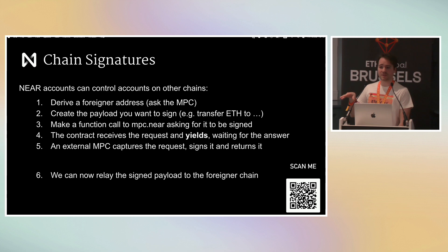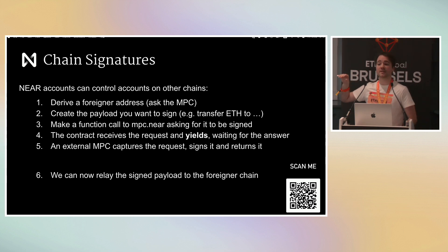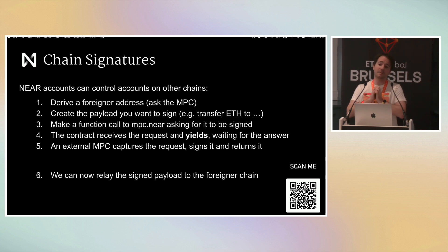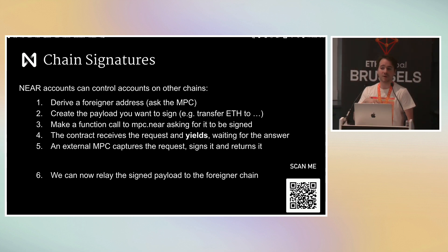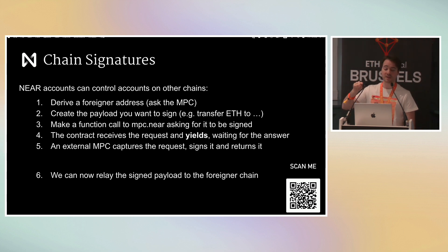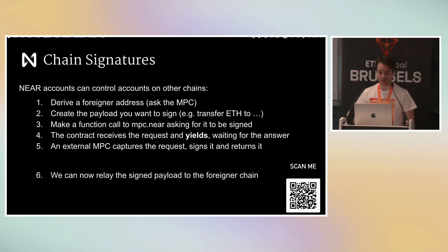Let me repeat how it works because this will be very useful when you're hacking. NEAR accounts can control accounts on other chains. First you ask the MPC: I am gile.near, which accounts can I control? It tells you. Then you say: can you create a payload for that Ethereum account making a transaction to another account, like sending Ethereum? Then you make a call on-chain — just a normal function call on a NEAR smart contract — and you wait. Meanwhile, the smart contract is also waiting, because smart contracts in NEAR can wait. It waits until the MPC service answers. Once the answer is there, you get your signed transaction, which you can relay.